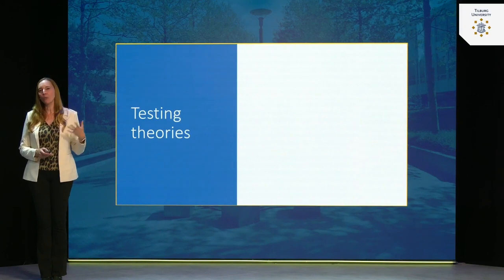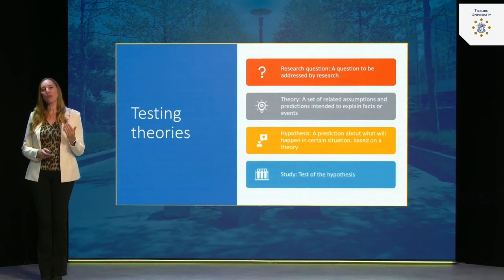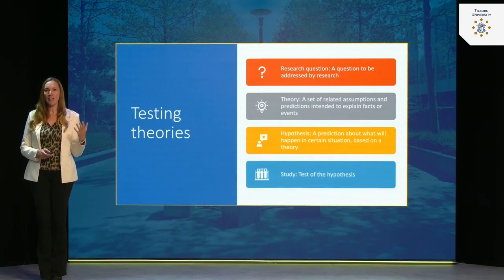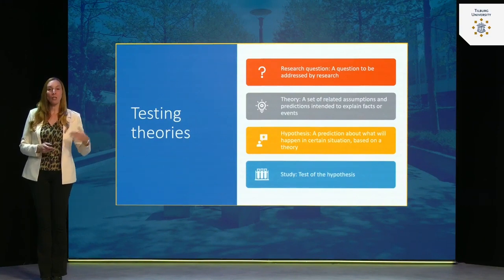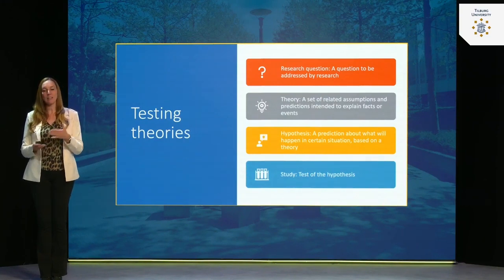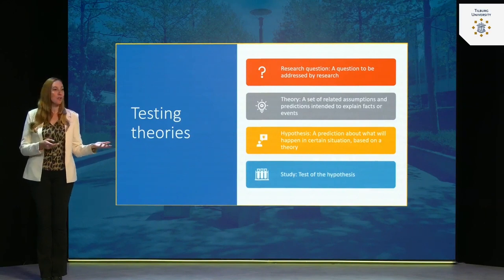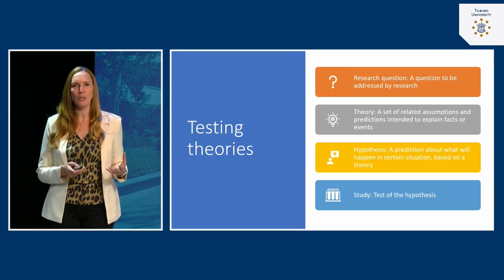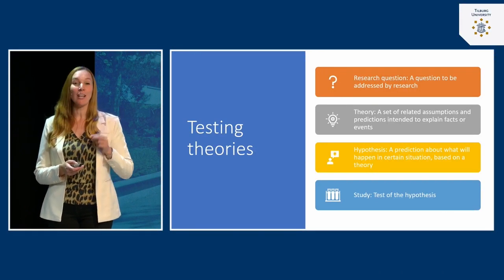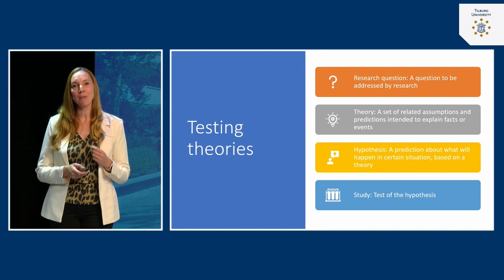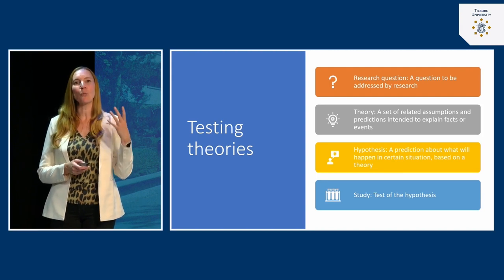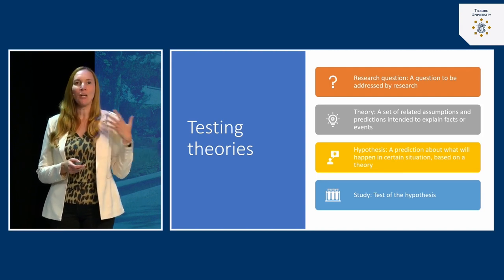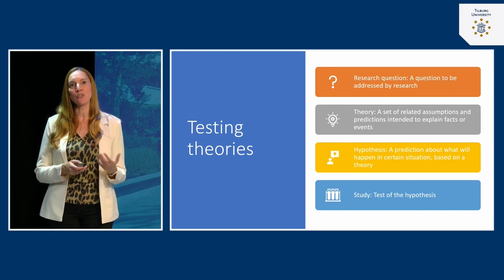So let me walk you through how research works. First of all, you oftentimes have a question as a researcher — something that's on your mind, something that you're wondering about. This can be spurred because you read a scientific article, or you had a debate with a colleague, or sometimes you just go about your life and run into a certain situation and start wondering: is this something I could test in my social psychology lab? So we start off with a research question — a question that we can address in scientific research.